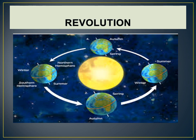The part that is nearer to the sun gets summer and the part farther away gets winter. So when the northern hemisphere is having summer, the southern hemisphere is having winter. When the north pole is tilted away from the sun, the northern hemisphere receives slanted sun rays and thus has winter. During this time the southern hemisphere receives direct sun rays and thus has summer.